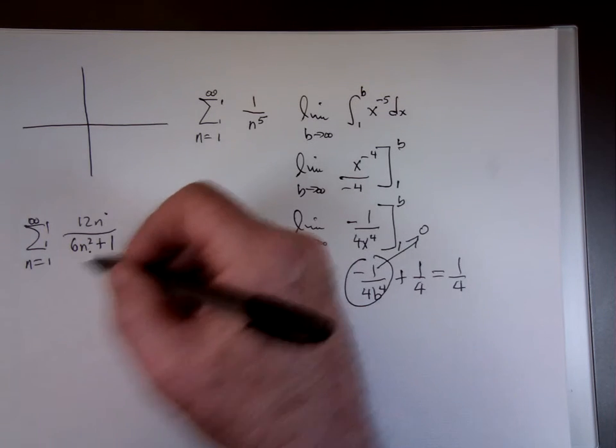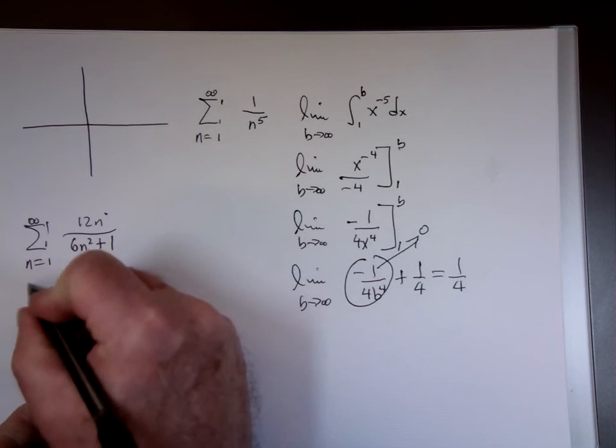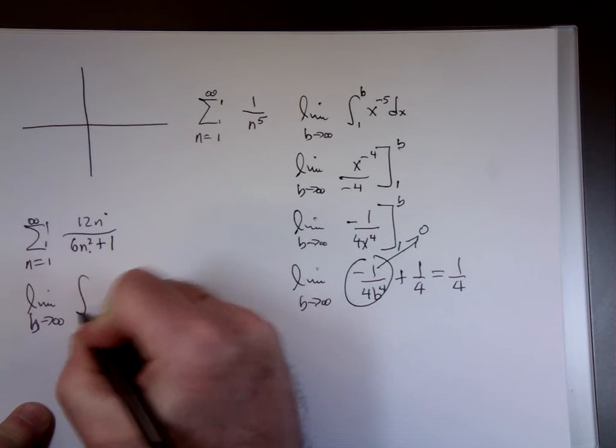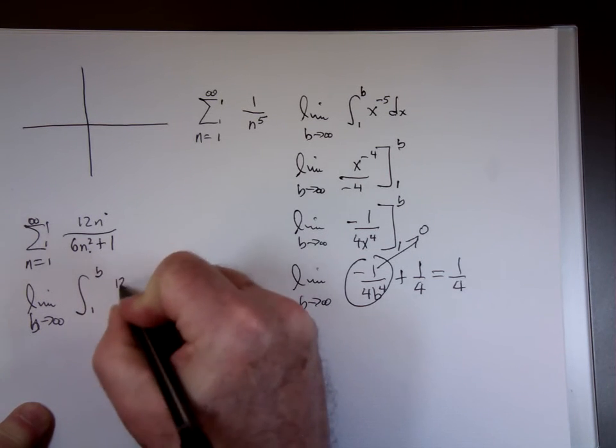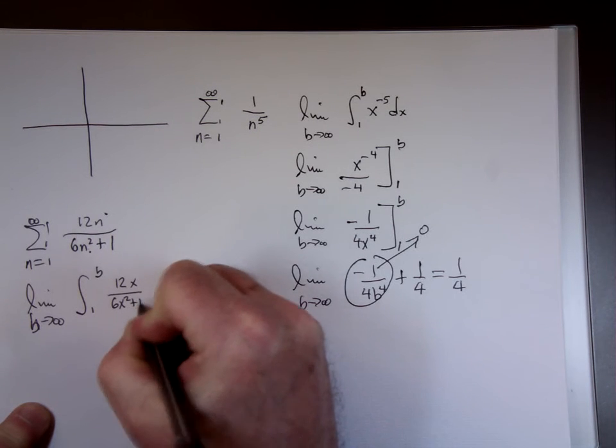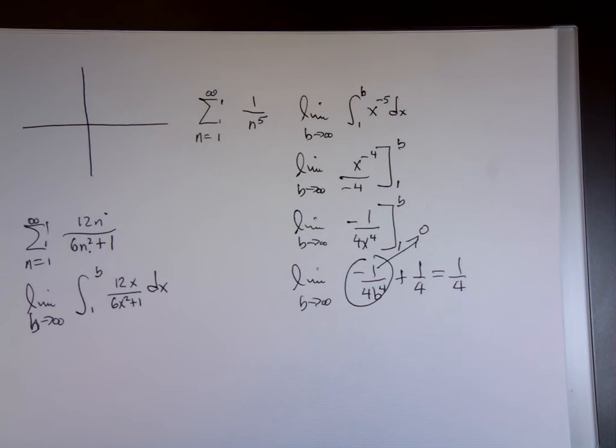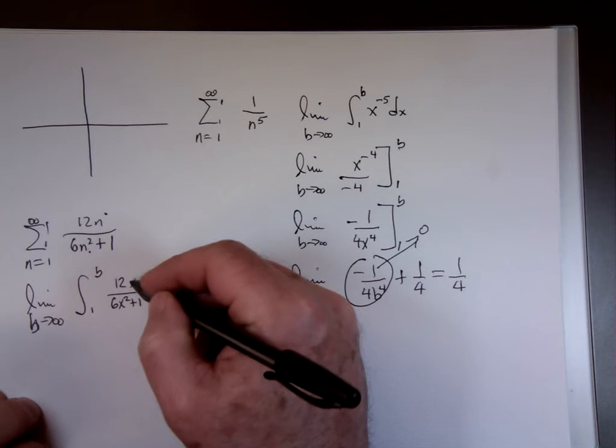Now could we prove it with the integral test? That's what they're asking you to do. Let's do it. Use the integral test on this. We're going to take the limit as b goes to infinity, 1 to b, 12x over 6x squared plus 1. Basically you just take the expression here and express it in terms of x. So that's what you have.